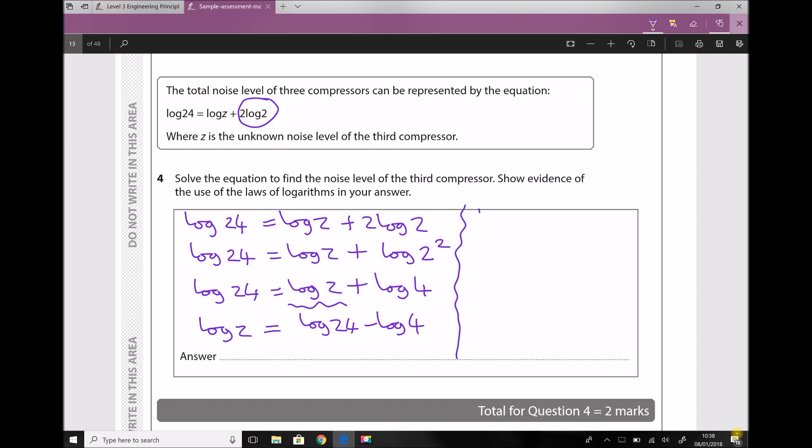Returning to our question, we see that we have something in that form: log 24 minus log 4. So let's rewrite again. This time we're going to have log z equals log 24 over 4 using that second log law. Well, 24 divided by 4 is just 6, so now we can see that we have log z equals log 6.